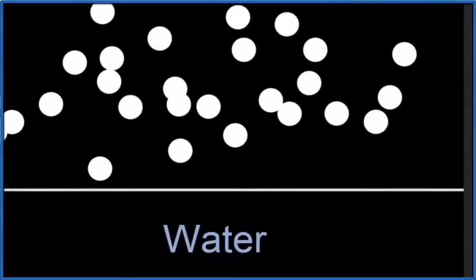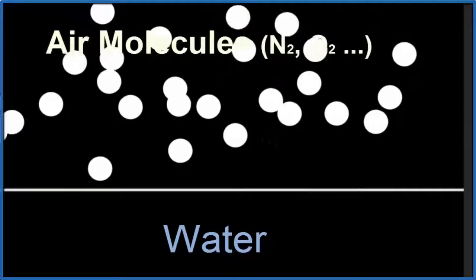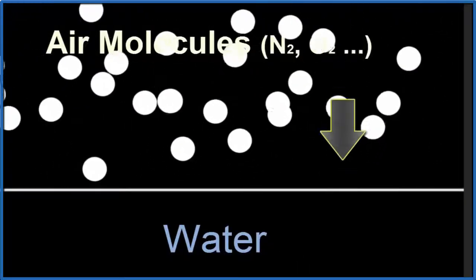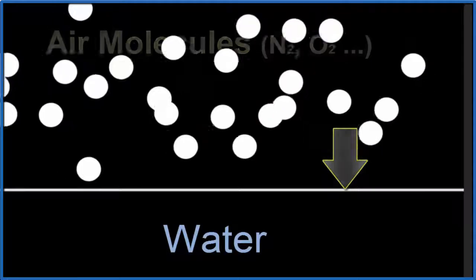We can think of atmospheric pressure as the collisions of air molecules against the surface of the water. That's the pressure. The more collisions, the greater the pressure.